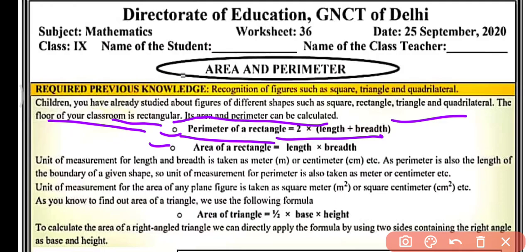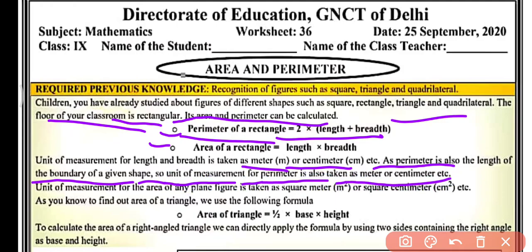The unit of measurement for length and breadth is taken as meter or centimeter. As perimeter is the length of the boundary of a given shape, the unit of measurement of perimeter is also meter or centimeter. And the unit of measurement for area of any plane figure is taken as square meter or square centimeter.